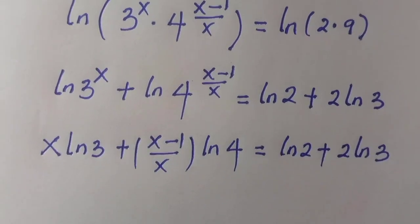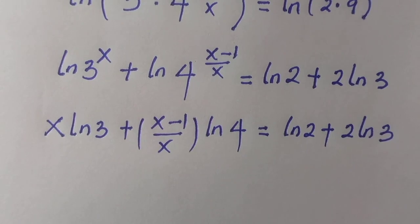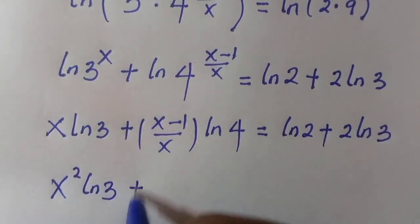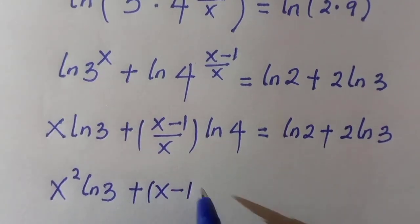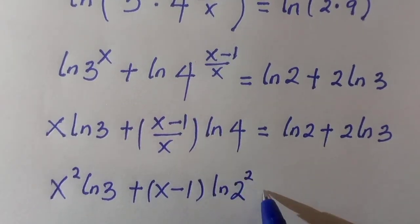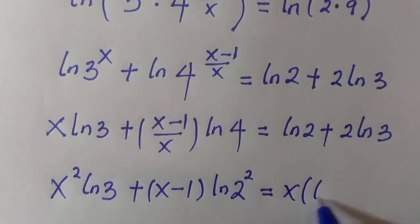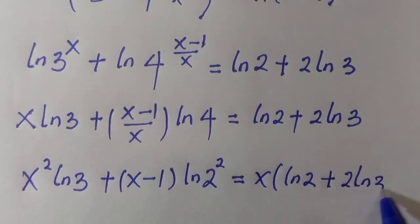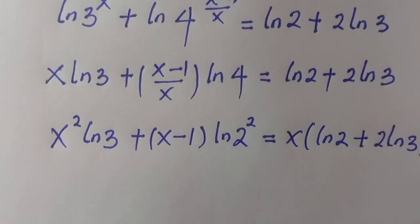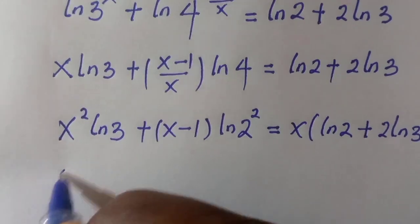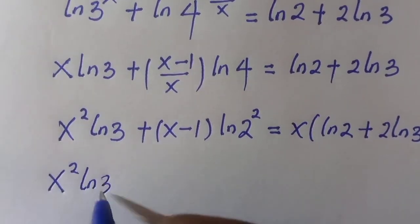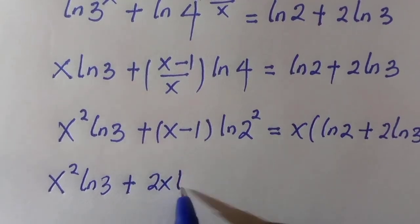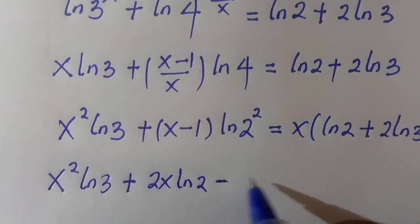Let's multiply through by x. By doing that, we have x squared ln 3 plus (x minus 1) ln 4, where ln 4 equals 2 ln 2, equals x ln 2 plus 2 ln 3. Next we expand this and we have x squared ln 3 plus 2x ln 2 minus 2 ln 2.